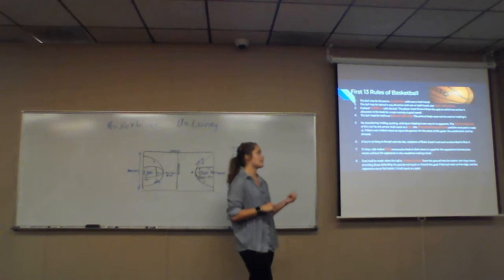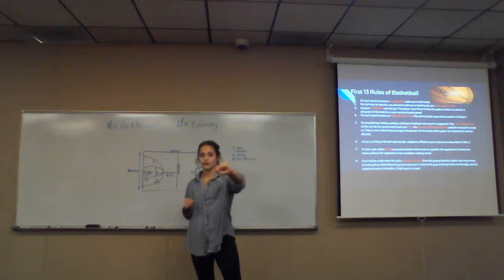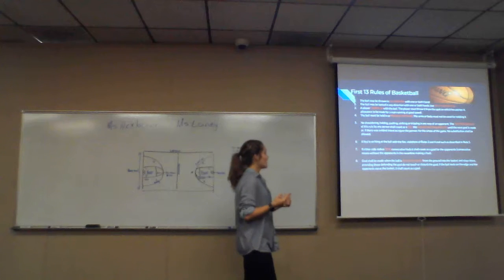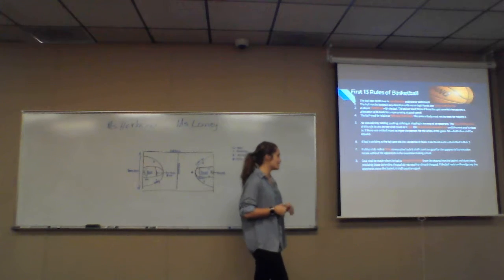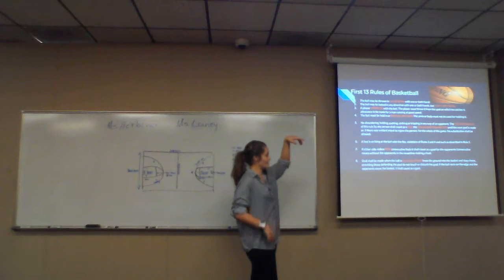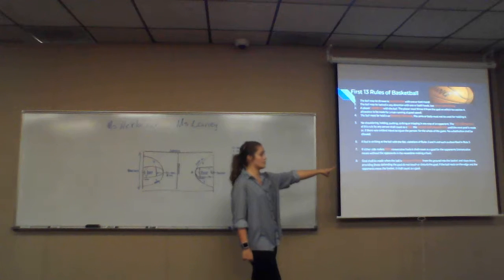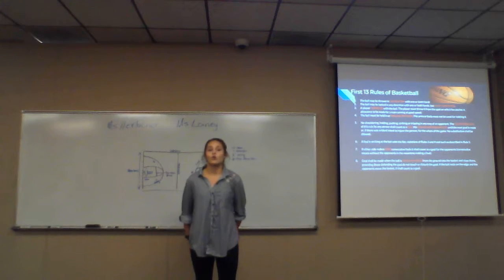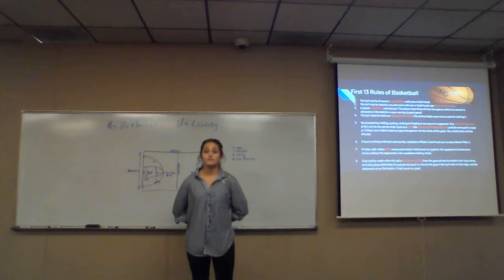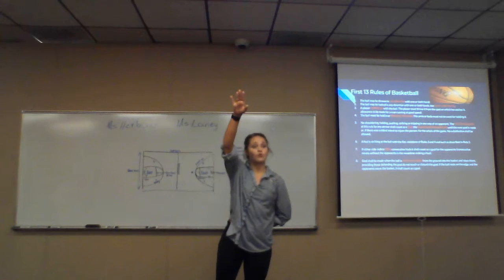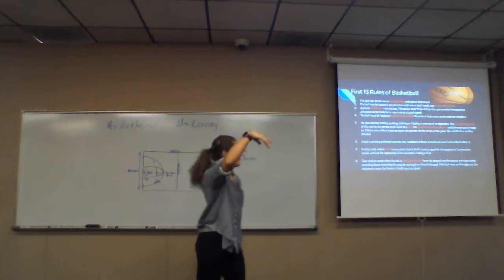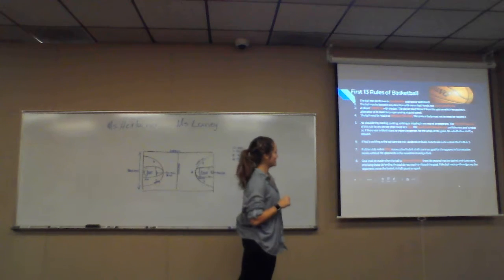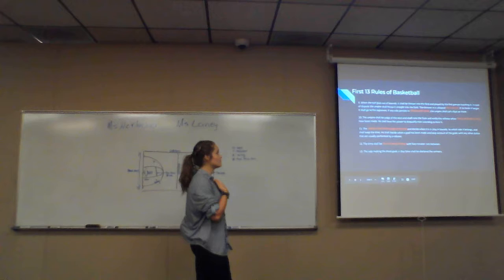The sixth rule: a foul is striking at the ball with the fist — violations of rules three and four. If either side makes three consecutive fouls it shall count as a goal for the opponents. The eighth rule: a goal shall be made when the ball is thrown or batted from the ground into the basket and stays there, provided those defending the goal do not touch or disturb it — that's basically goal tending, which is not allowed.